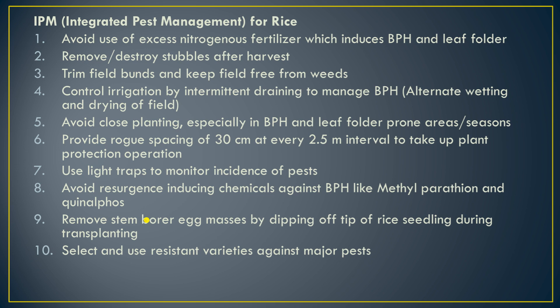Provide row spacing of 30 cm at every 2.5 meters — every 2.5 meters, leave a 30 cm spacing. Use light traps to monitor incidence of pests. Light traps can be used to monitor which pests are appearing in the field.